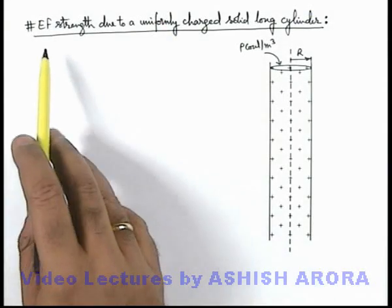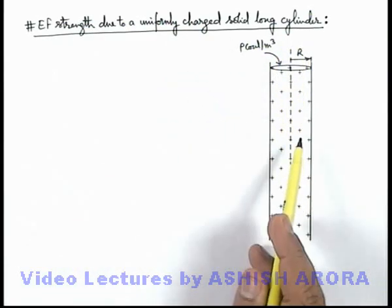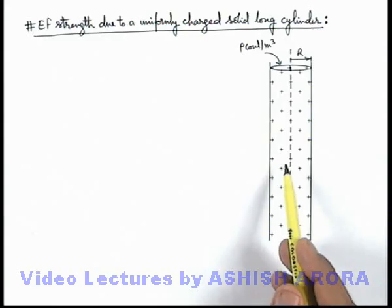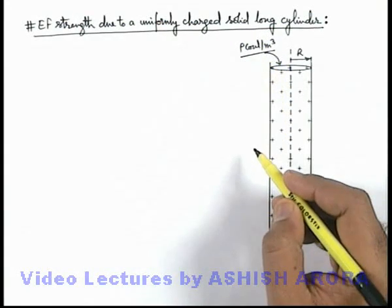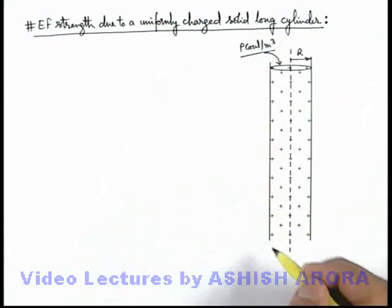Let us discuss electric field strength due to a uniformly charged solid long cylinder. Here we can see the figure in which there is a long cylinder which is uniformly charged with volume charge density ρ coulomb per meter cube. It is of radius R and we treat it to be very long.